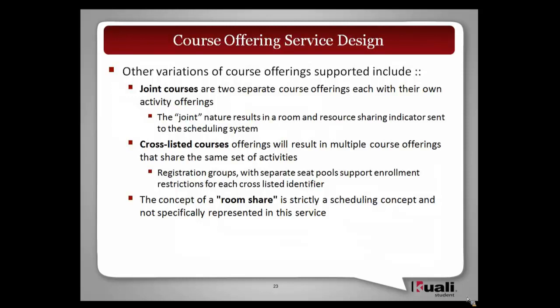So this feeds in a little bit to some of the, I know we sort of mentioned briefly, but there are some other courses that also have some implications for scheduling. So joint courses being two separate offerings that have their own activities, but they need to come together from a sharing perspective from the space. So these are some of the anomalies or extra things that will also have to feed into the scheduler. This is where we're going to have to tell the scheduler or provide the override that it's okay that these two things happen in the same place. Similarly, cross-listed are also sharing space from a scheduling perspective, but they've got different registration groups, different seat pools, different enrollment restrictions as needed.